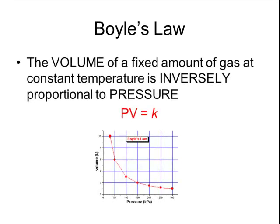The official definition of Boyle's Law is that the volume of a fixed amount of gas at constant temperature is inversely proportional to pressure. We can represent this relationship mathematically by saying PV equals some constant K.